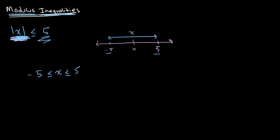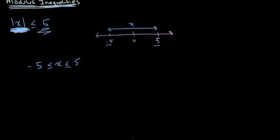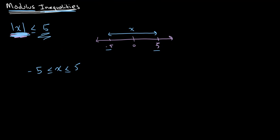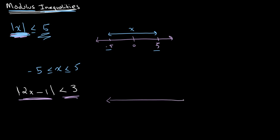Let's look at a slightly more complicated example. Let's say we have the absolute value of 2x minus 1 is less than 3. This is saying that the magnitude of 2x minus 1 will be less than 3. On a number line, say this is 0, this is 3, and this is negative 3.